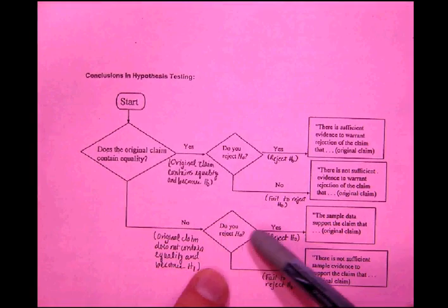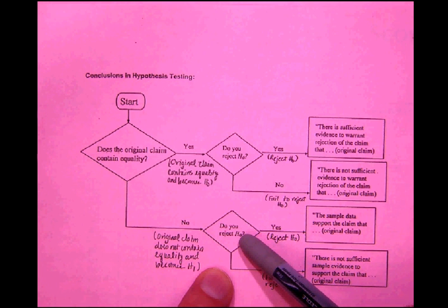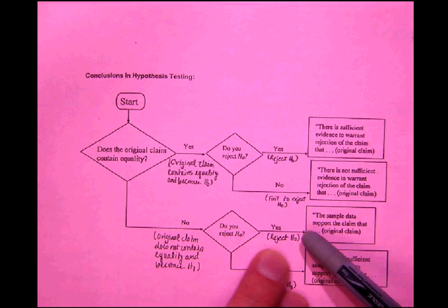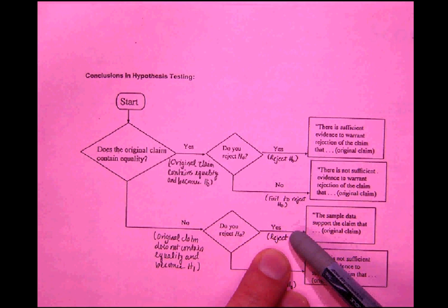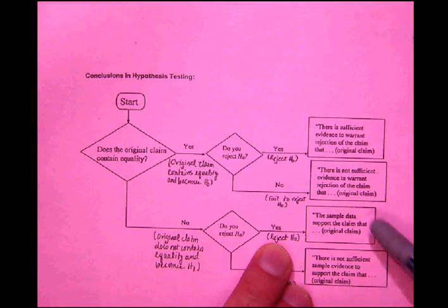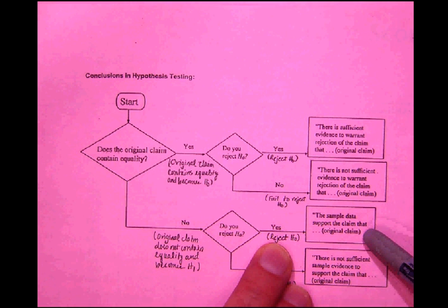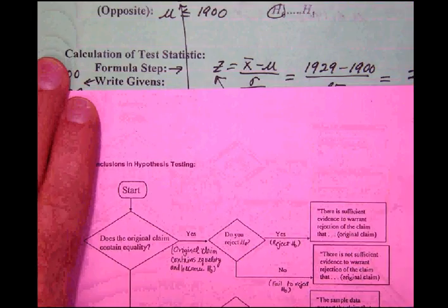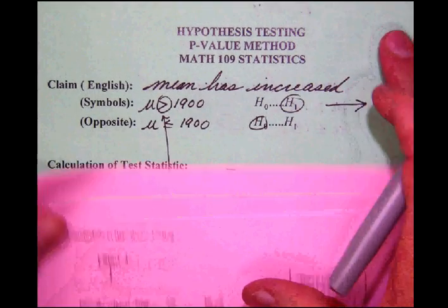Now, do you reject the null hypothesis? And the answer is, yes, we did. So what we do is we follow this branch, the yes branch, and we read then the conclusion. The sample data support the original claim. And, of course, what that was was that, in fact, the mean has increased. So we are supporting this original claim that the mean has increased.